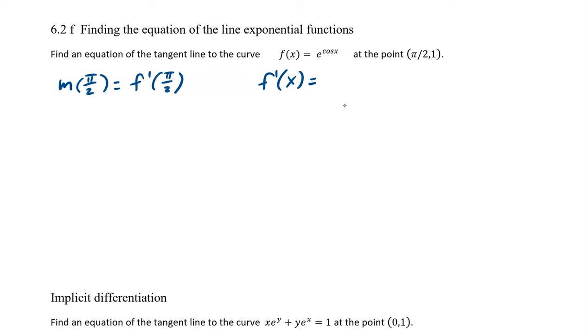And so this is our chain rule. This is e to the cosine of x times the derivative of the exponent. So that would be negative sine. So e to the negative, negative e cosine x, I'm putting it in front, sine x.